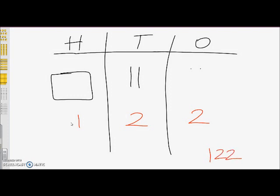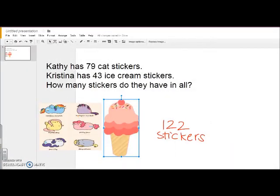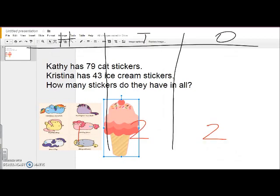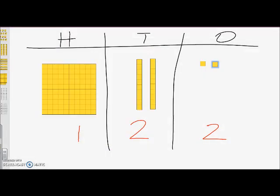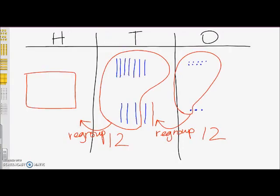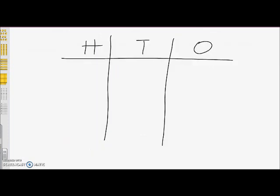This answer is similar to the answer we got when we built the problem using rods and cubes. We solved the problem using concrete models and pictorial models. Now, we will use the algorithm. We will write 79 plus 43 vertically.